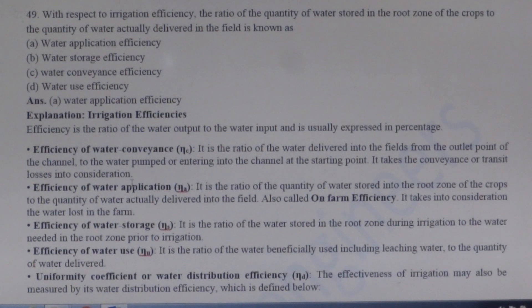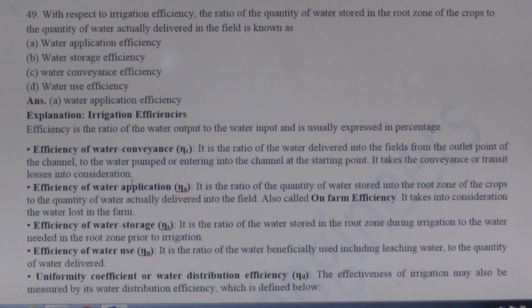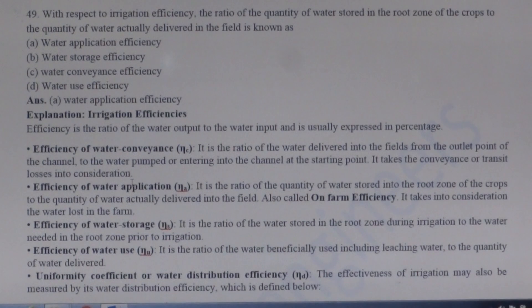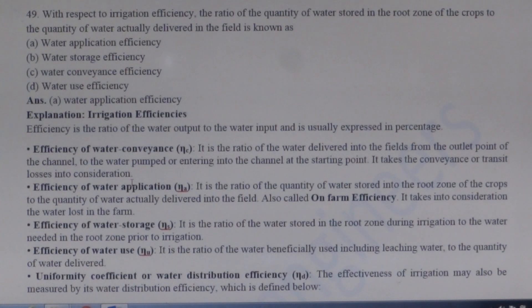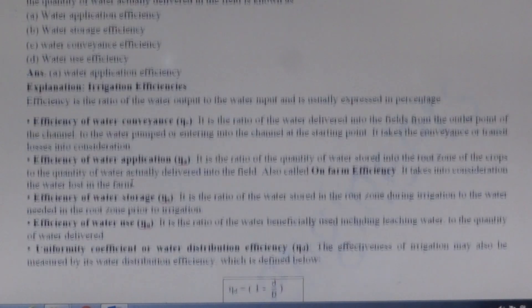Next question on irrigation efficiency: The ratio of the quantity of water stored in the root zone of the crop to the quantity of water actually delivered in the field is known as water application efficiency, also known as on-farm efficiency. It takes into consideration the water lost in the field. Other types of efficiency are water conveyance efficiency, water storage efficiency, water use efficiency, and uniformity coefficient.